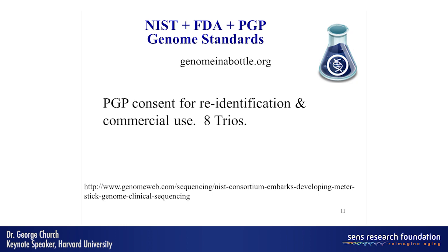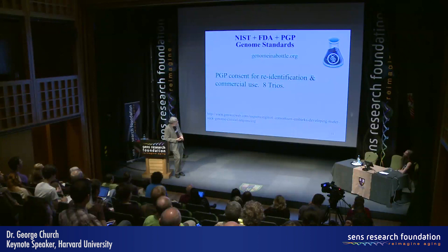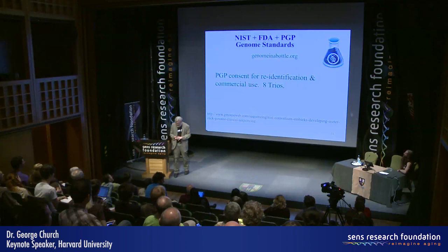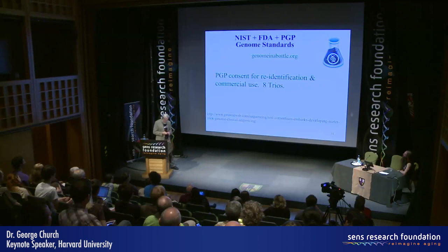This is taken from the ENCODE project. The NIH GenBank is working with the PGP, and the FDA is establishing genome standards for genomes. They decided that after looking around the world, there was only one project that was properly consented. So they're starting their standards with eight trios and 20 more cell lines from the PGP. We've made progress on both error rate and haplotype phase. This was published in Nature 2012, and there's a new one in Genome Biology just coming out in the next few days.